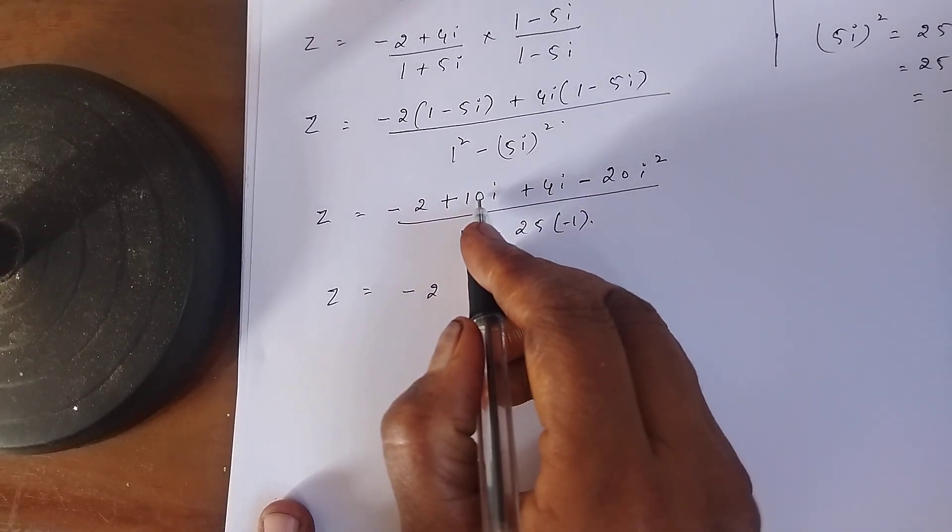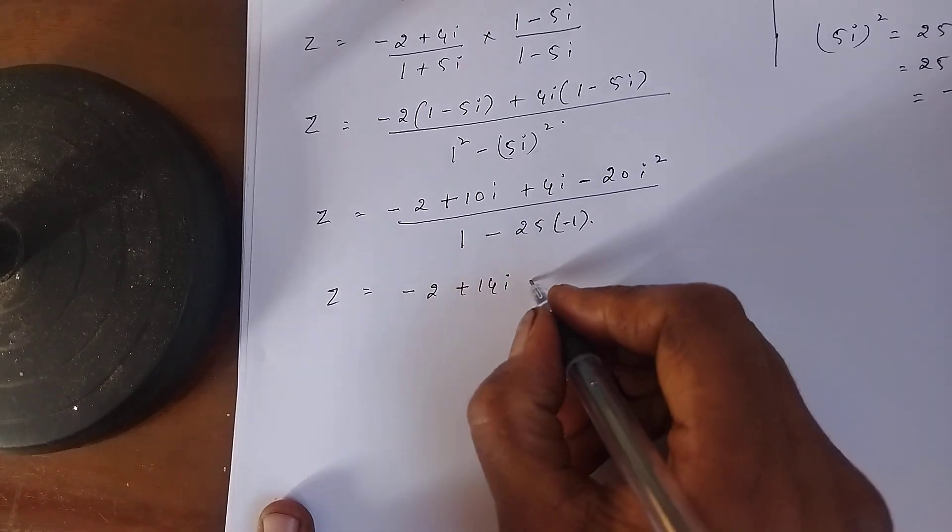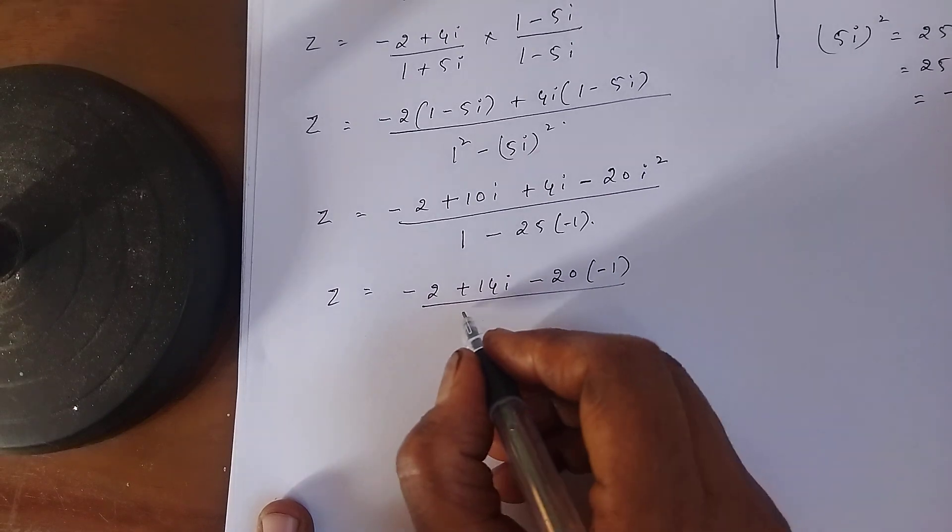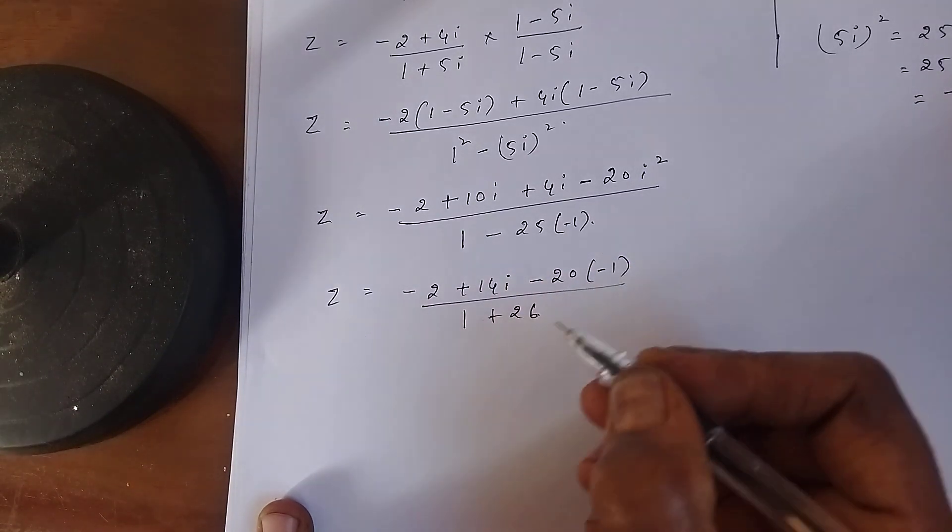10i plus 4i is 14i. Minus 20i² means -1 divided by 1, minus into minus is plus 26.